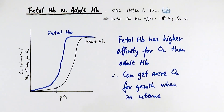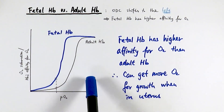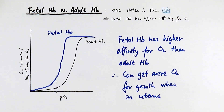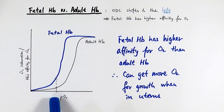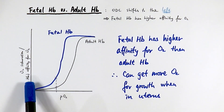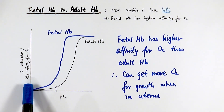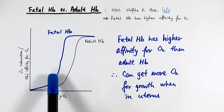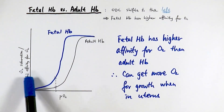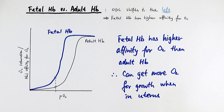The second situation is comparing fetal hemoglobin and adult hemoglobin, where the curve shifts to the left. Fetal hemoglobin has a higher affinity for oxygen than adult hemoglobin because of their structural differences. Comparing the two under the same conditions, the adult hemoglobin has a lower affinity for oxygen, meaning it releases oxygen more readily, allowing the fetal hemoglobin — which has a higher affinity — to grab onto that oxygen. This is obviously very important because the fetus needs to obtain oxygen for growth while still inside the uterus. That is the oxygen dissociation curve.